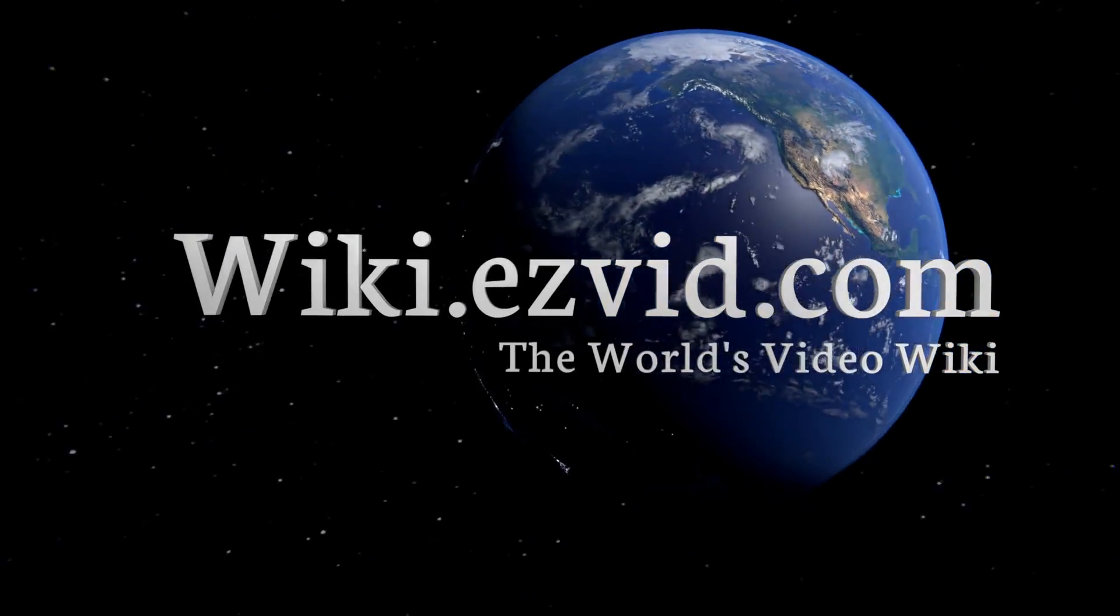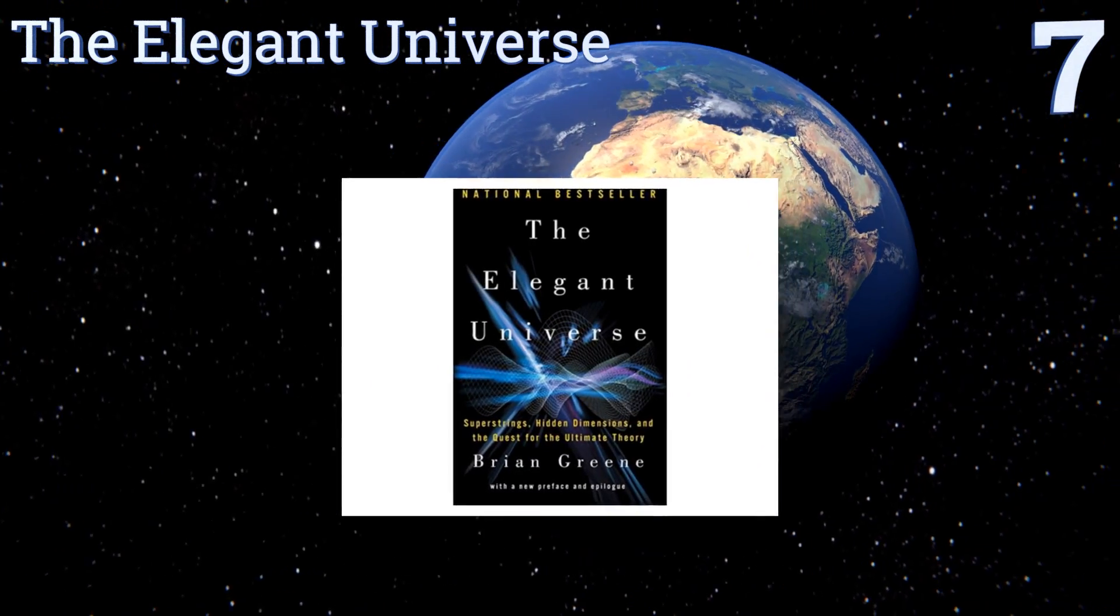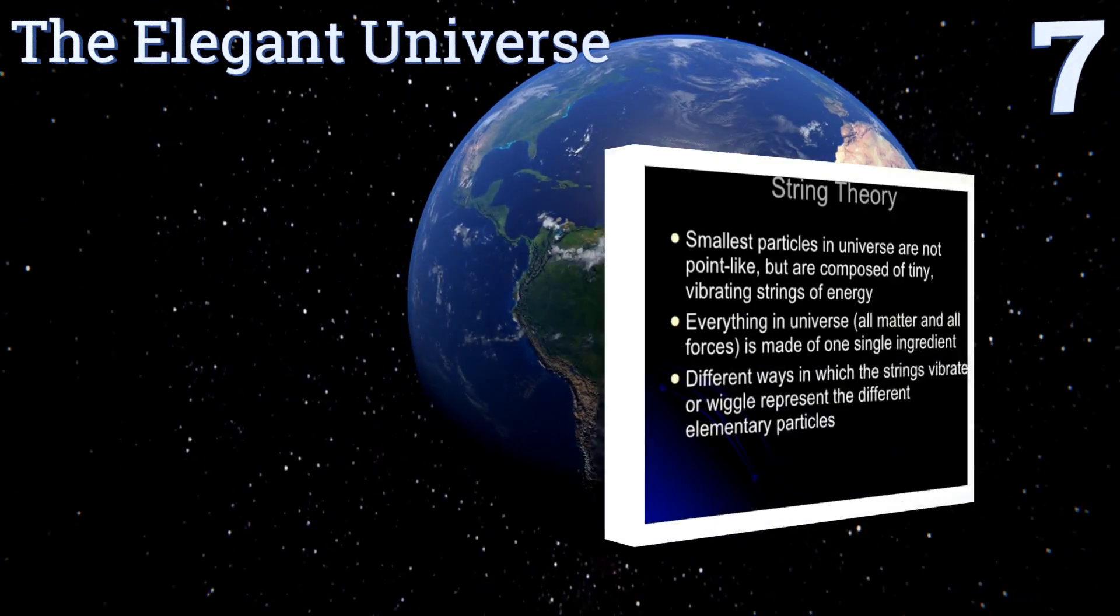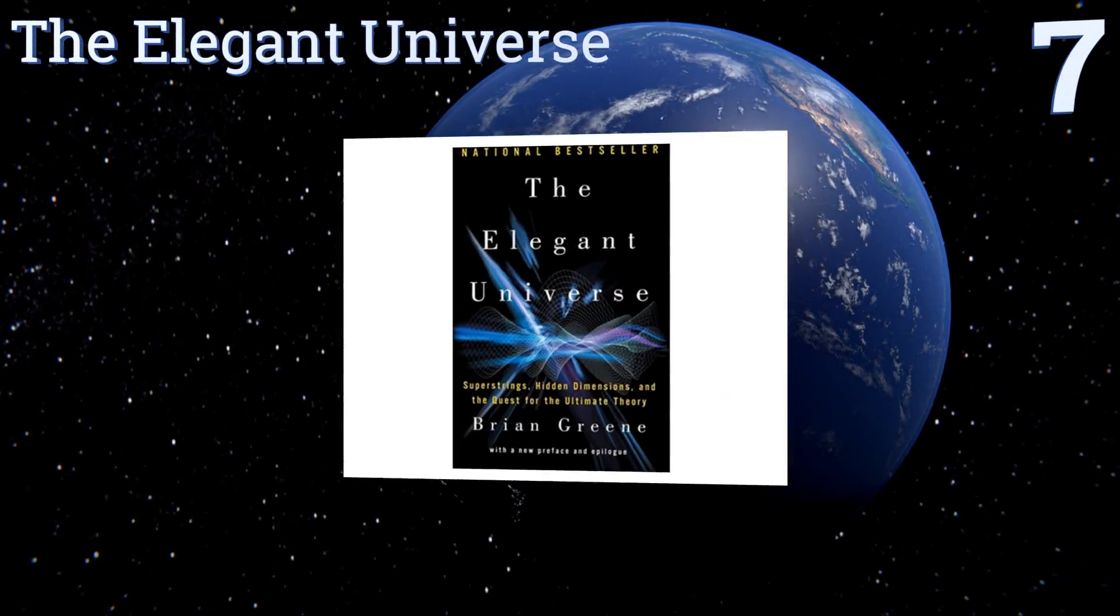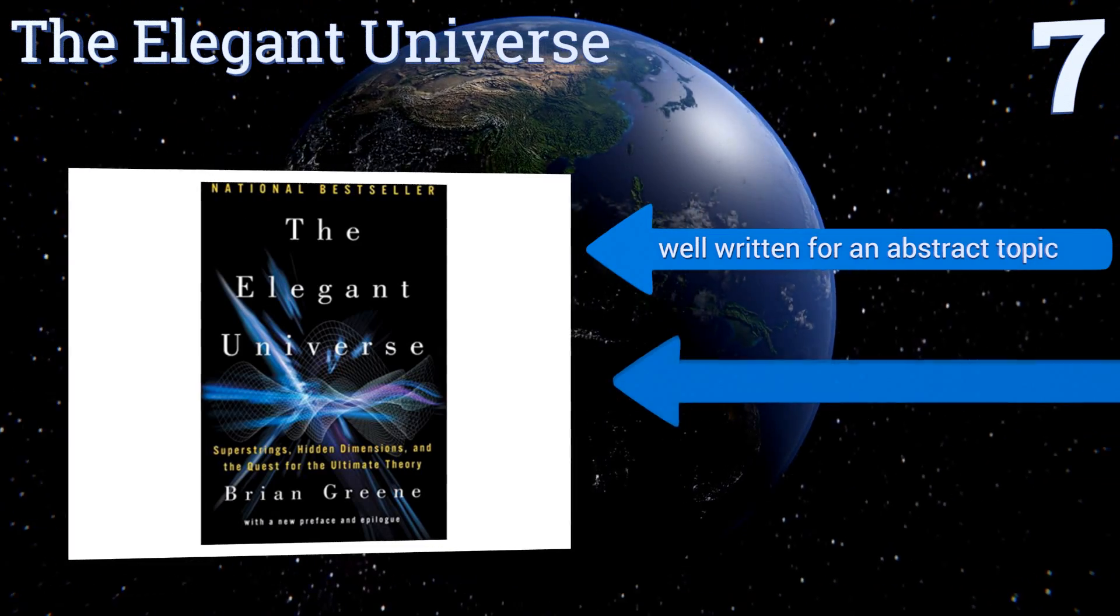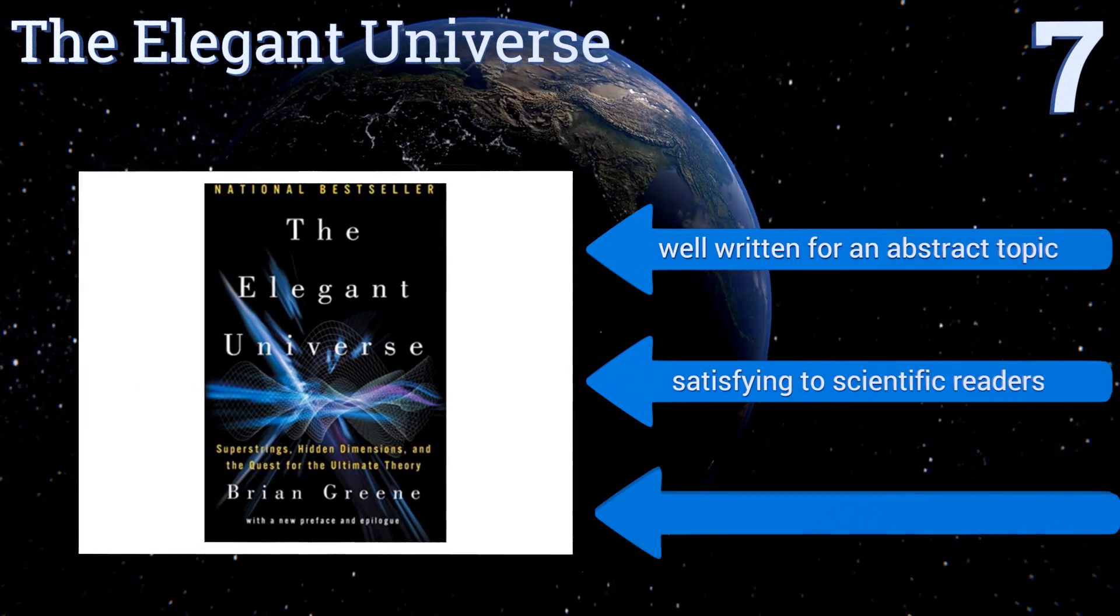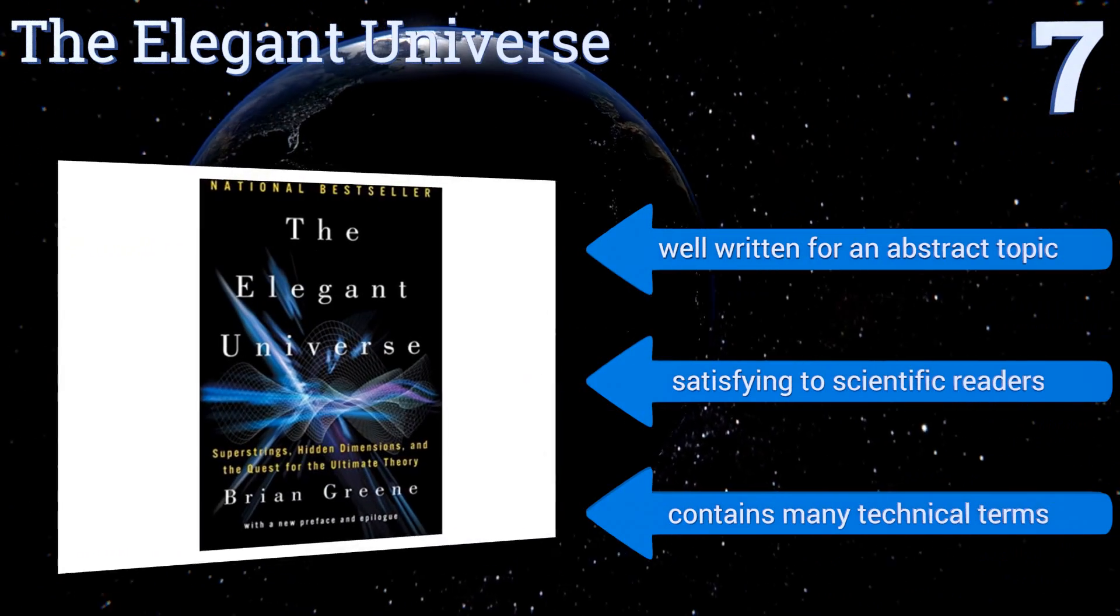At number seven, The Elegant Universe defines a multi-dimensional world where the fabric of space is constantly ripping apart and repairing itself. It includes a range of very sophisticated ideas that may be better suited to those who have previous knowledge of the field. It's well written for an abstract topic and is satisfying to scientific readers, but it contains many technical terms.